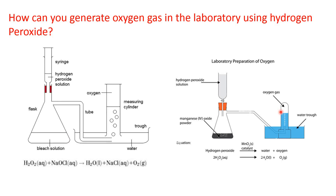In our chemistry lab, unused chromium 6 solution — that is dichromate or chromate solution — instead of throwing it directly into the sink, we used to convert it by allowing it to react with hydrogen peroxide, generating oxygen collected by downward displacement of water. This is one of the best practices in our chemistry lab. We have come to the end of this video. Thank you.